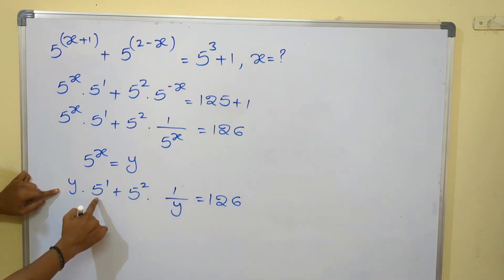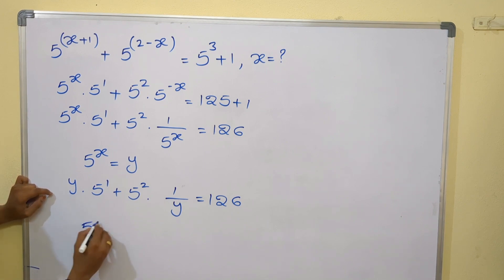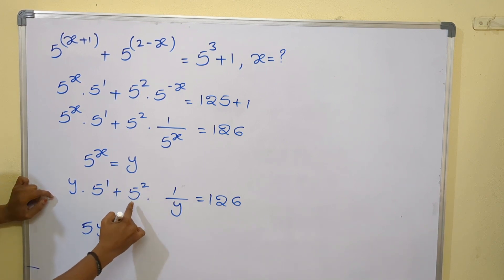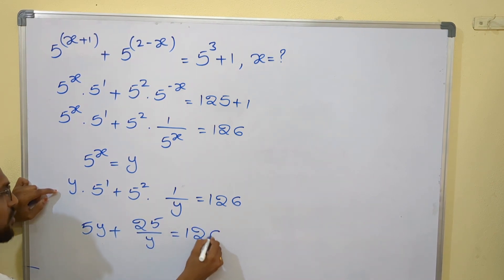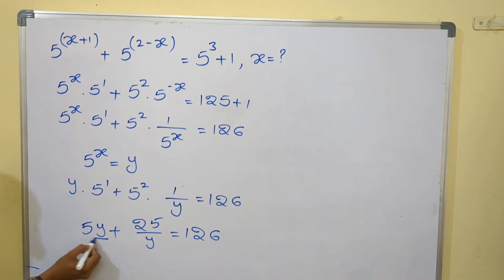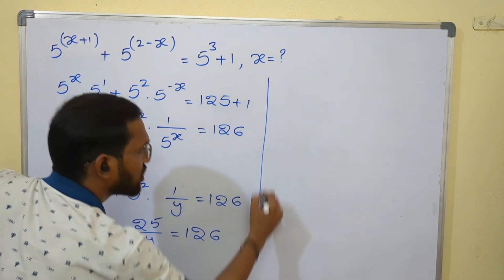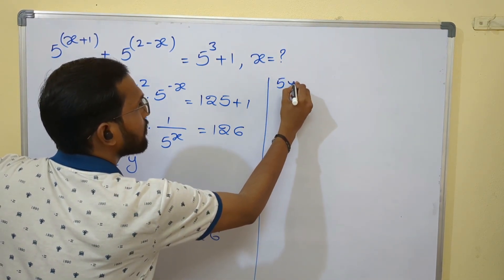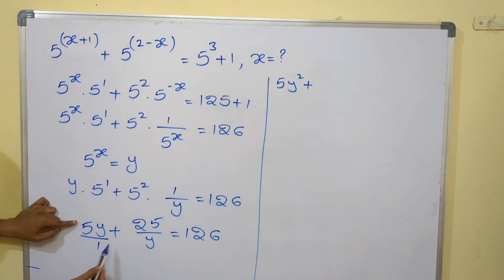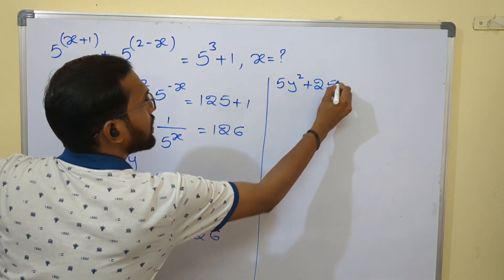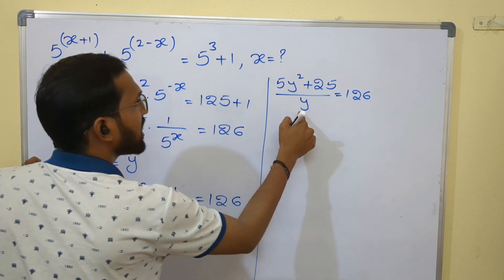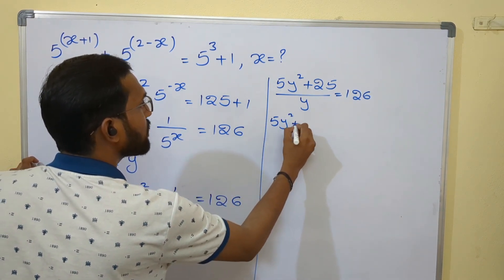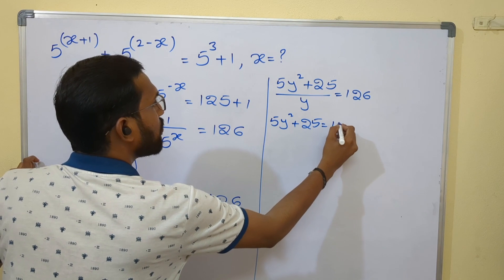So 5y + 25/y = 126. Since there is no denominator on the left side it is implicitly 1, so I do cross multiplication. This gives 5y² + 25 = 126y. Now taking the denominator to the right side, we get 5y² + 25 = 126y.